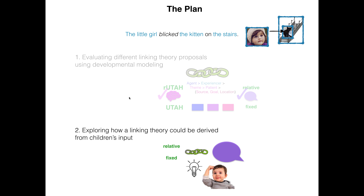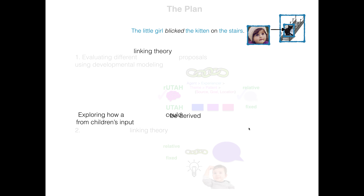In the second part of this talk, I want to explore how a linking theory could be derived from children's input, since we just saw that those that derive the links from the thematic representation to the syntactic position seem to be compatible with children's development of linking knowledge.